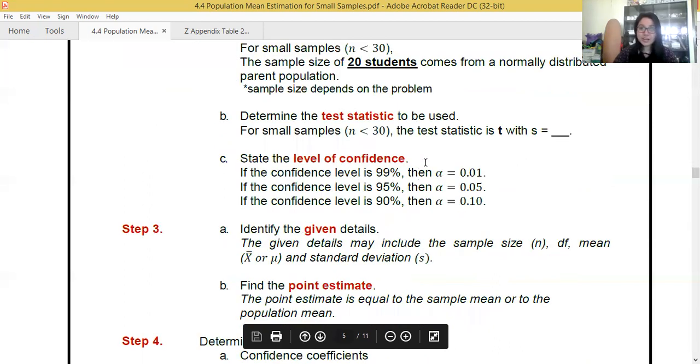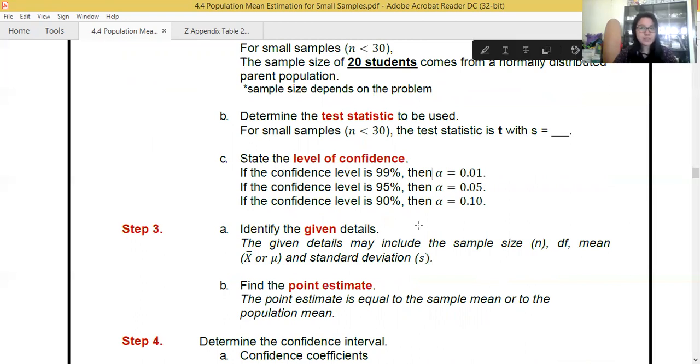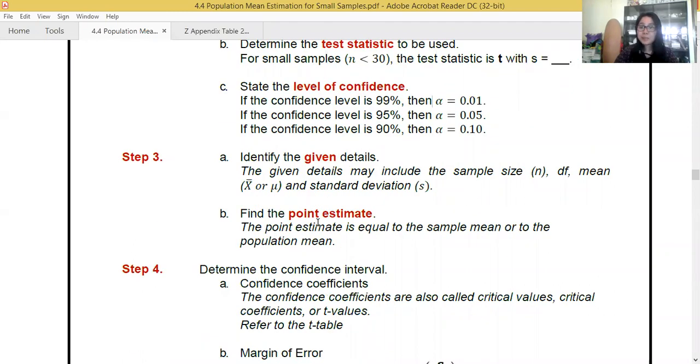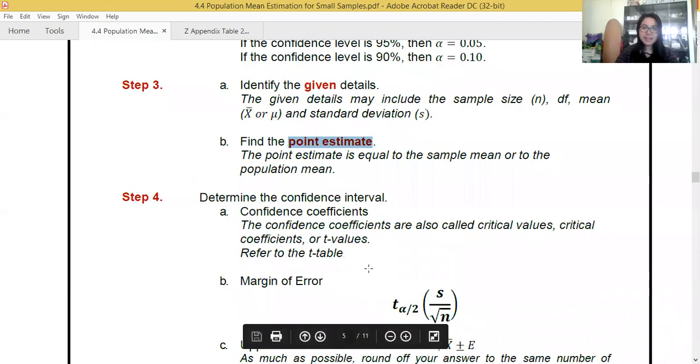Level of confidence. I think you're well aware, we are well acquainted of this one. If it's 99%, our level of significance, our alpha is 0.01. For 90%, our alpha is 0.10. You need to be very careful between 99% and 90%. Most of our students get an error with this one. 0.01 is 1% while 0.1 is 10%. Next, step three, given details. You need to search for the sample size, the degree of freedom, the mean, and the standard deviation.